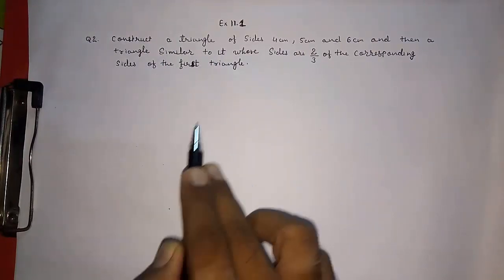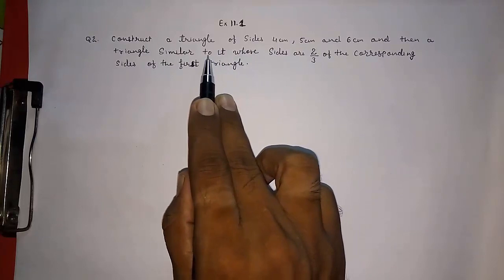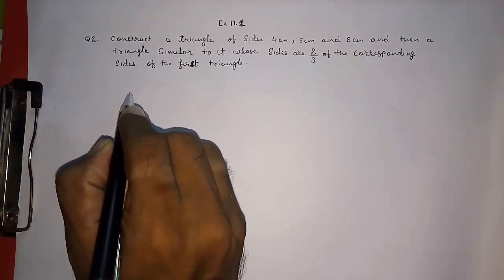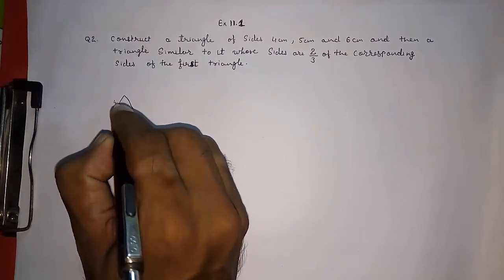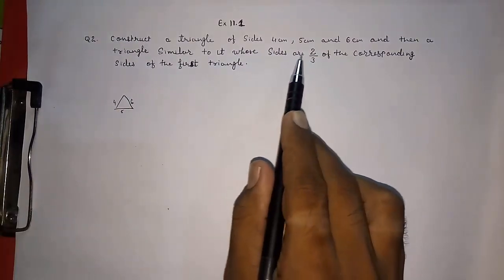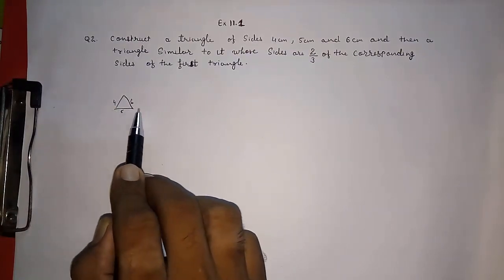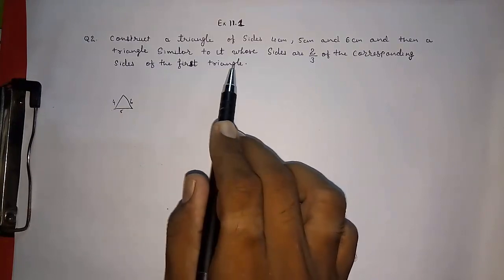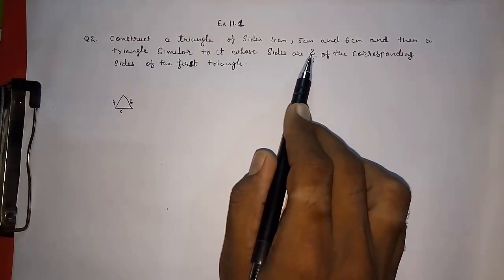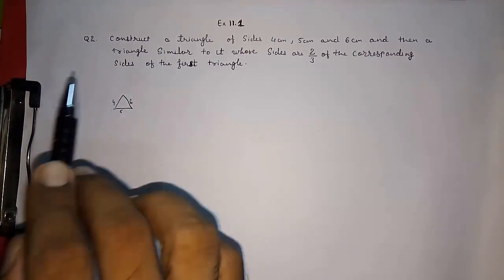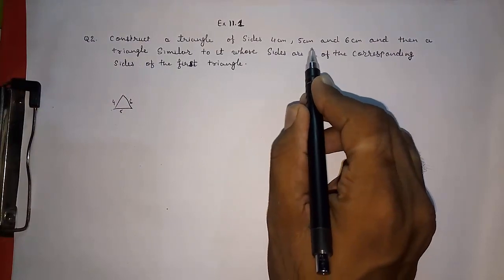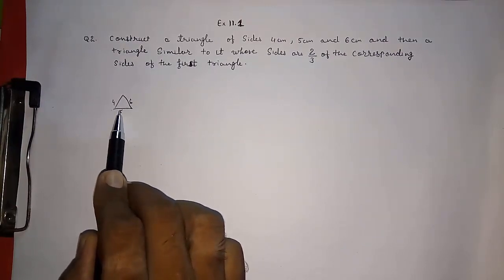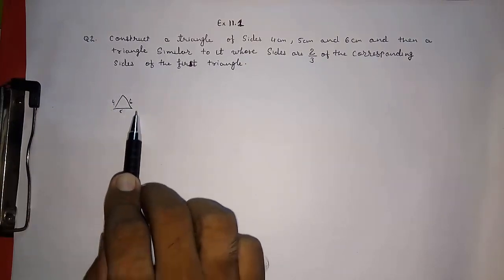Then we have to draw a triangle similar to it, whose sides are 2/3 of the corresponding sides of the first triangle. First, I am drawing a rough figure — we draw a triangle of 4, 5, and 6 centimeter, then draw a similar triangle whose sides are 2/3 of that. This means we draw two parts out of three parts. That similar triangle will be inside this triangle — keep that in mind.